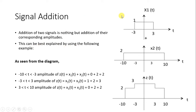Let's take one arbitrary rectangular wave x1(t) and another arbitrary rectangular wave x2(t). x1(t) starts from minus 3 to 3 and has a constant magnitude of 1. x2(t) has a magnitude defined between minus 10 to 10 with a constant magnitude of 2. This is the resultant waveform after adding x1(t) plus x2(t).